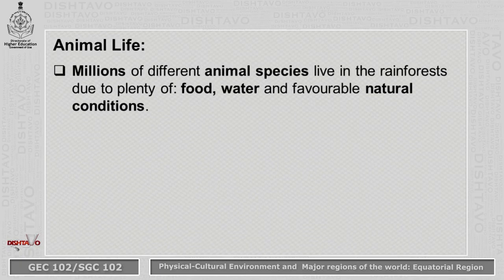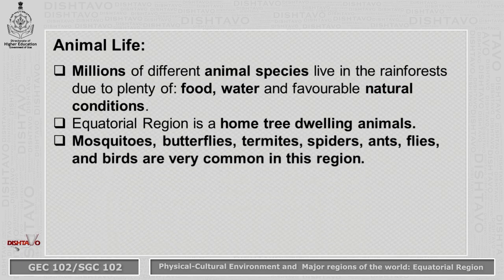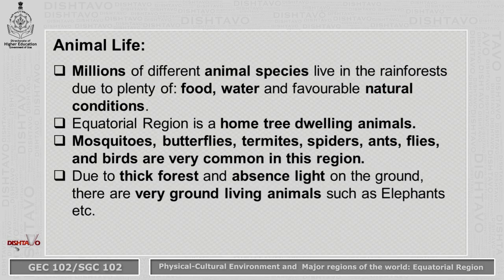Not only is plant life rich, but animal life is also very rich. You find millions of different animal species here because of the availability of food, water, and favorable natural conditions. The equatorial region is the home of tree-dwelling animals because of the thick canopy. Mosquitoes, butterflies, termites, spiders, ants, flies, and birds are very common. Due to the thick forest and absence of light on the ground, there are very few ground-living animals such as elephants.